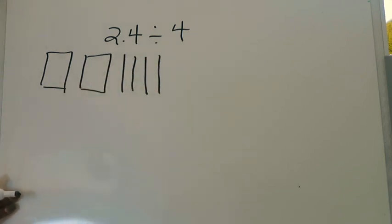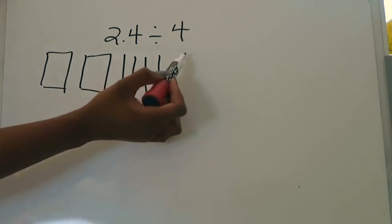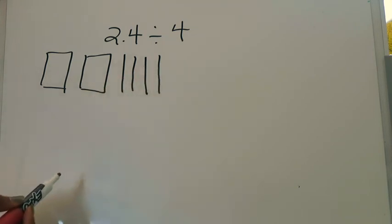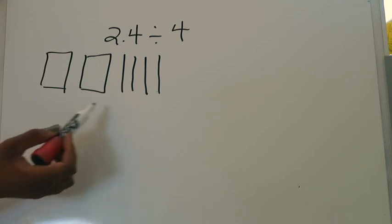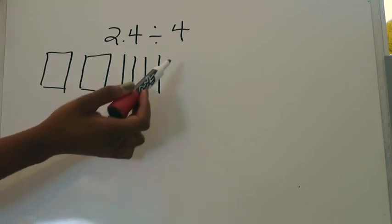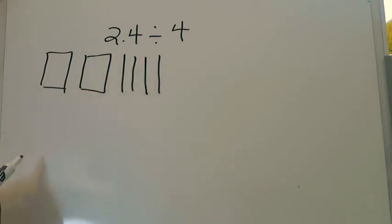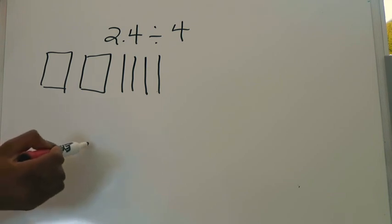We're going to model two and four tenths: here's one, two wholes and one, two, three, four tenths. I've modeled my dividend. Next, look at your divisor again — how many groups am I going to be creating out of two and four tenths? Your divisor is four, so you need to create space for four groups.